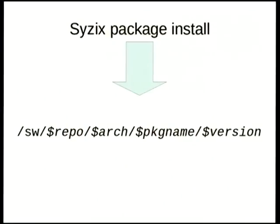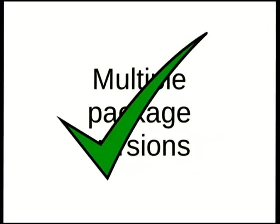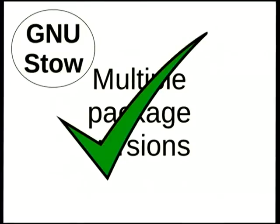Sysix doesn't do this. What Sysix does do is install each package into its own location in the file system. By default, the path starts with /sw — stands for software. Underneath that there's a repo or repository, then an architecture like x86_64_linux — like the triple but without the sys part — then the package name as a directory, and finally a directory for each version. This allows you to have multiple versions of any package on the system concurrently, which I think is a very good thing.